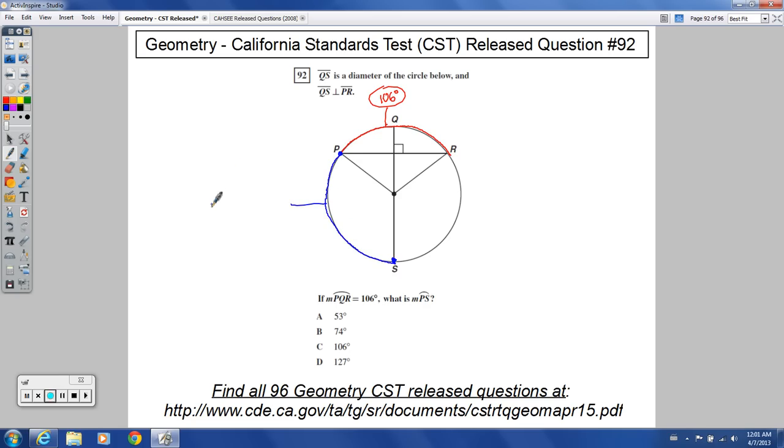Would be 360 minus 106, divided by 2. So it's what's remaining of the circle, 360 minus 106, but it's only half of that.